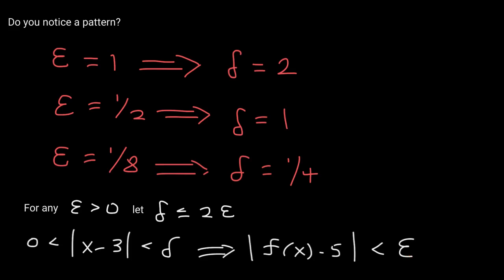From this point forward, we're going to be looking at different functions and we need to prove that the limit is what they're saying it is. In other words, we're going to have to find a corresponding delta for a given epsilon.